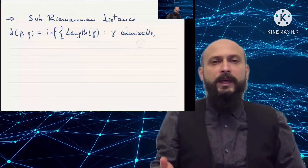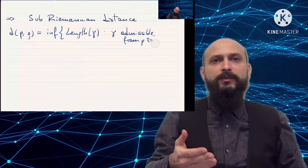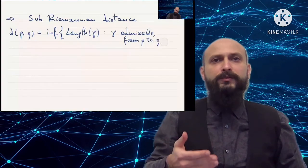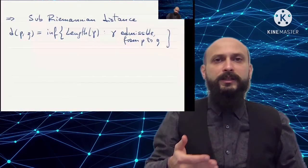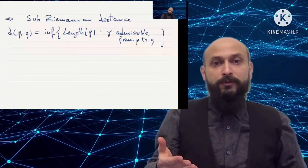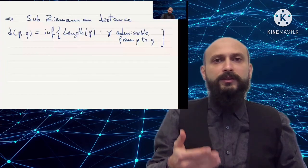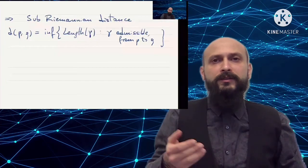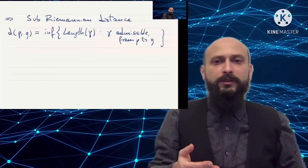The distance between two points is given by the infimum of the length of all admissible curves from P to Q. In formula, d(P,Q) is equal to the infimum of the length of γ, where γ is an admissible curve — namely it is tangent to the distribution — and it is a curve that goes from P to Q.